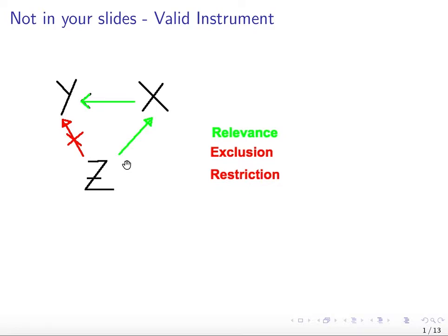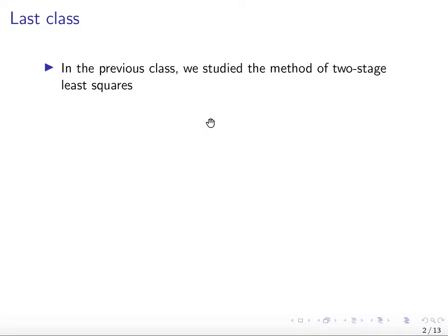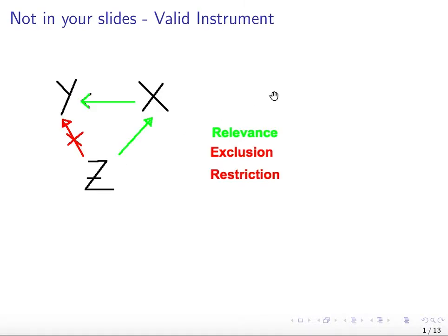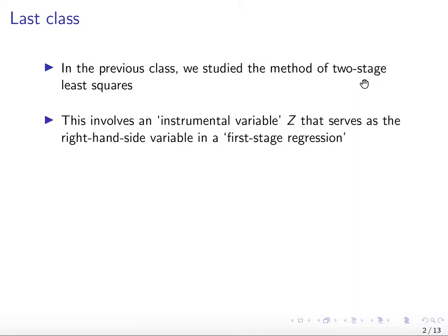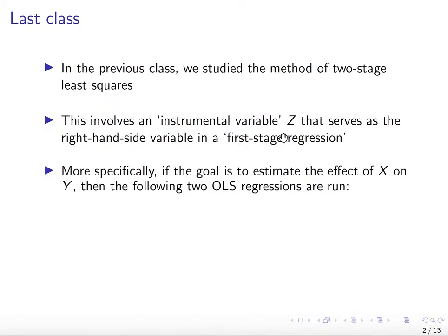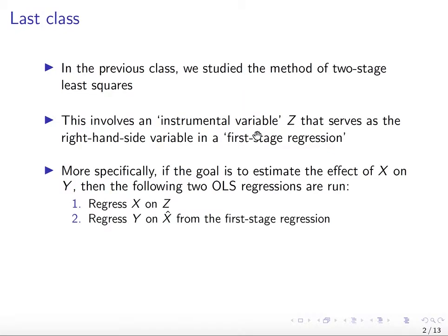So this is where we are in this course. In the previous class, we studied a method where we make use of an instrument variable called the two-stage least squares. In the two-stage least squares, you need an instrumental variable z that will first be used as a right-hand side variable in the first stage regression, where you regress x on z. Then you use x-hat — the variation in x due to z — and regress y on x-hat in the second stage.